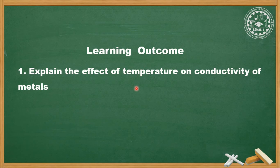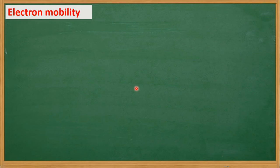After listening to this lecture and understanding it, you will be able to explain the effect of temperature on conductivity of metals. Before going forward, the very important concept of electron mobility is what we have to understand first. What does it mean by electron mobility? To what factors is it related? And what is its unit?